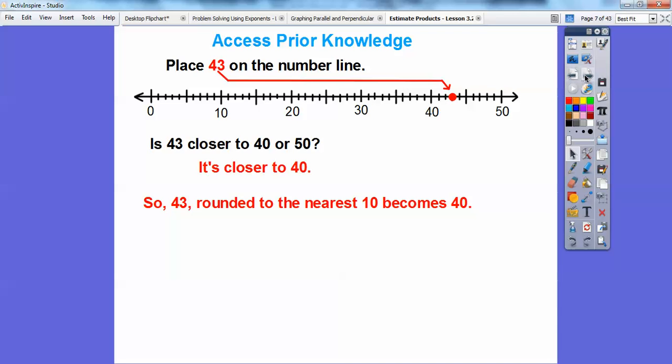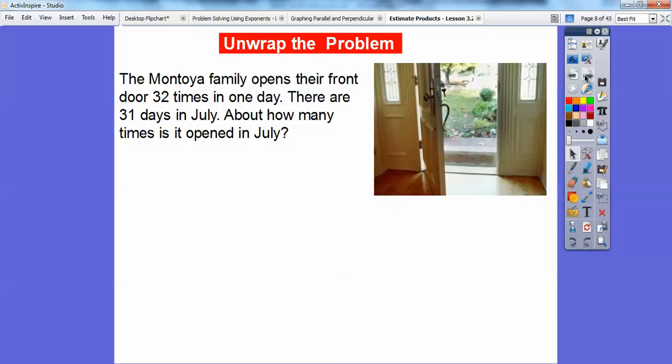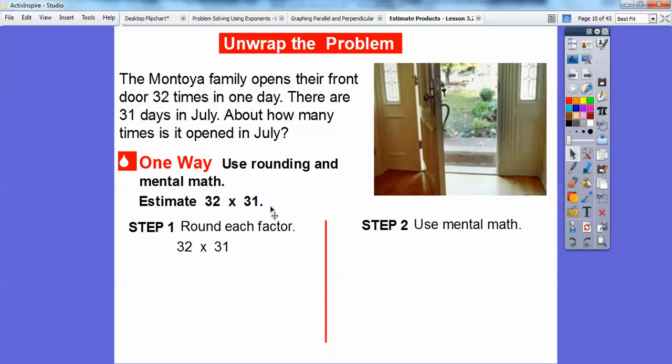So let's try one of these you guys. So the Montoya family opens their front door 32 times in one day. There are 31 days in July. About how many times is it opened in July? Well this is an estimating problem because it's saying right here about how many. So it didn't say find an exact answer. So about how many. So one way is we're going to use rounded numbers in mental math. So what we're going to do first is round both 32 and 31 to the nearest 10. So these would both round to 30 and 30.